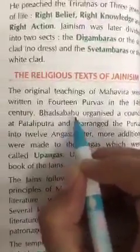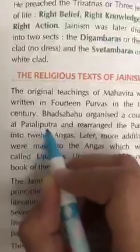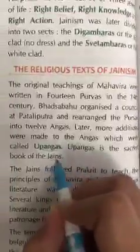Next is the Religious Text of Jainism. The original teachings of Mahavira were written in 14 Purvas. Bhad Sabahu organized a council at Patliputra and rearranged the Purvas into 12 Angas. Later, more additions were made to the Angas, which were called Upangas — the second book of the Jains. The Jains followed the Prakrit language to teach the principles of Mahavira, and the religious literature was called the Ardh Meghadi.